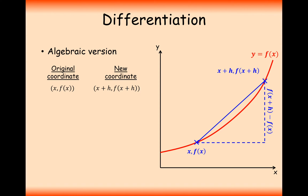So what we'll do now is look at the difference in y divided by the difference in x. With these two coordinates, it's f of x plus h minus f of x, and for the difference in x value, it's x plus h take away x, which will just leave us with h. And what we'll do is make h smaller and smaller until we get a very accurate prediction of what the gradient is going to be.